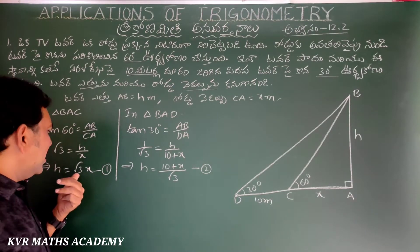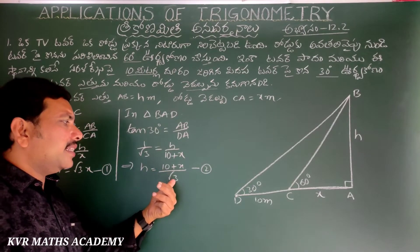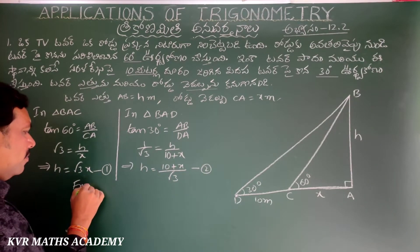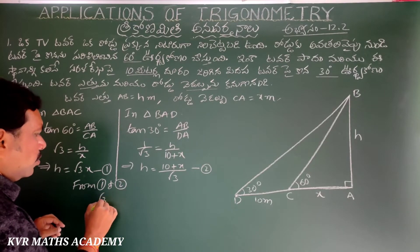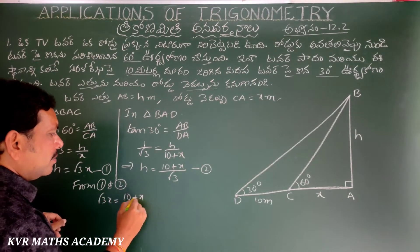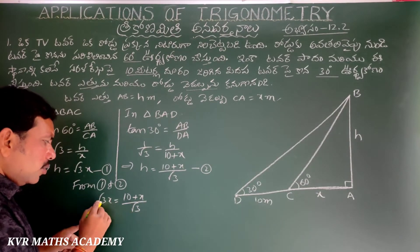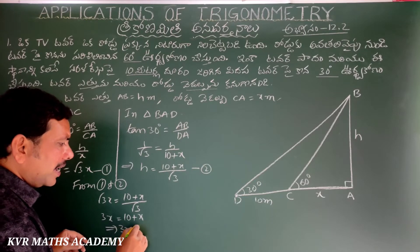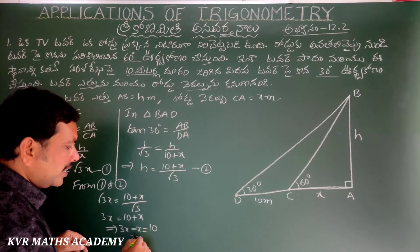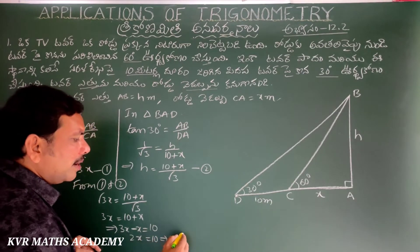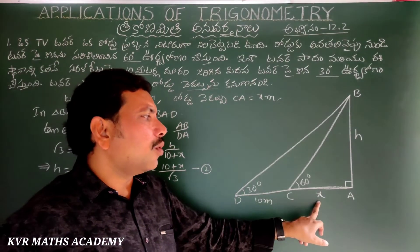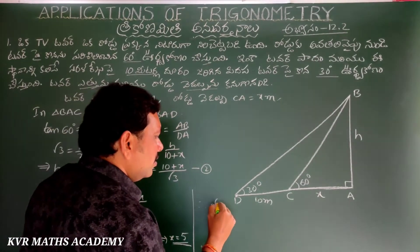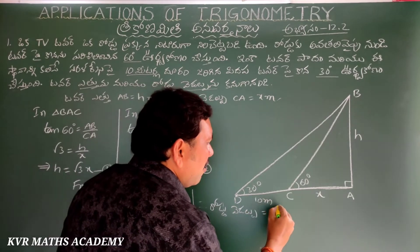This is equation 2. From equations 1 and 2, both equal h, so root 3 x equals (10 plus x) by root 3. Multiplying both sides by root 3: 3x equals 10 plus x, so 3x minus x equals 10, giving 2x equals 10, therefore x equals 5. Road distance equals 5 meters.